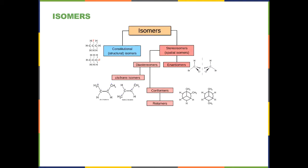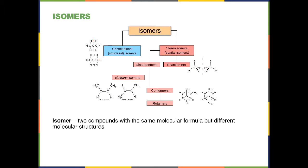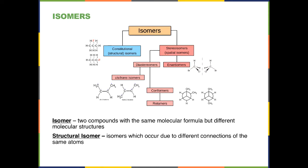There is a concept known as isomers. Isomers are defined as two compounds that have the same molecular formula but different molecular structures. There are two types of isomers. One is called a constitutional isomer, also sometimes called a structural isomer, which means the atoms are connected together in different ways — the same atoms but different connections. For example, in one structure the fluoride is bound to the second carbon, and in the other it is bound to the last carbon.